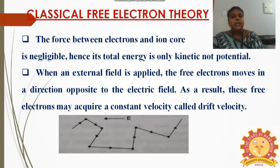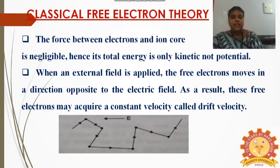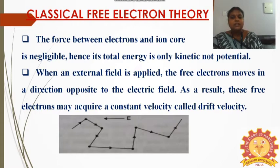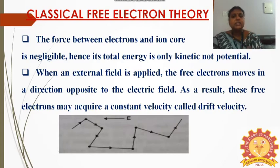Hence, the force between the electrons and the ion is negligible. Hence, its total energy is taken to be only kinetic, not potential. In the metal, if we apply an electric field, the randomly moving free electrons start to move in a direction opposite to the electric field. E represents the electric field direction — the arrow shows the electric field direction is towards the left — but the free electrons' movement is just opposite to the electric field direction. As a result of its movement, this free electron acquires a constant velocity called the drift velocity.